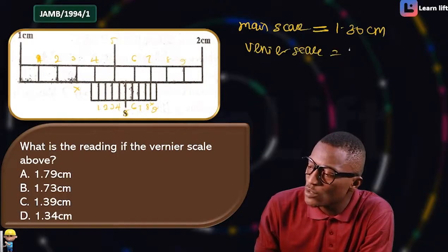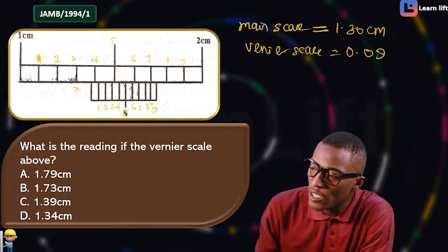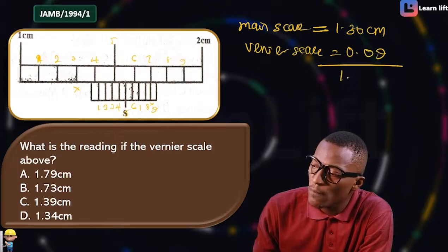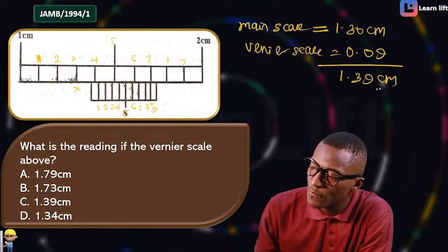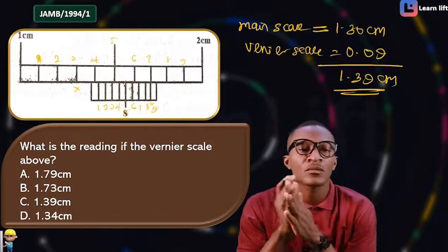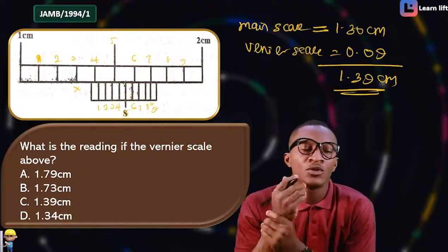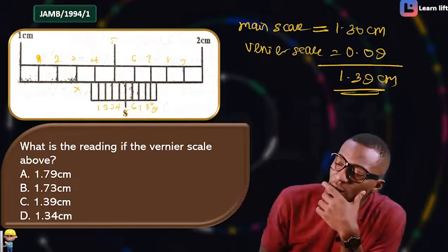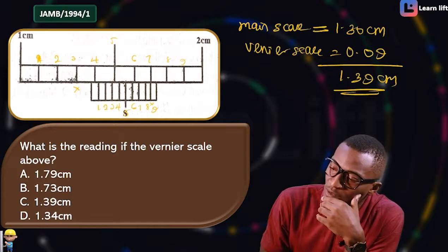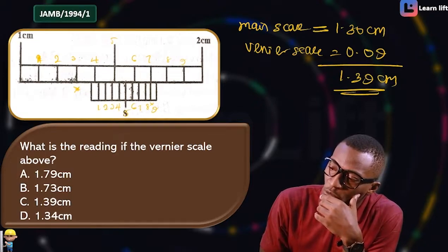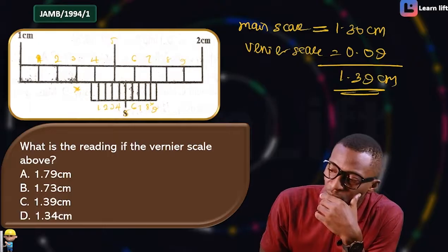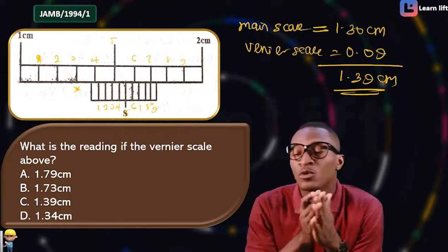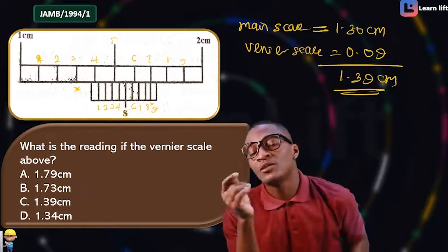...is equal to 0.09. Adding them together gives 1.39 cm. Remember, we start reading from where the vernier scale begins and count until both scales meet.